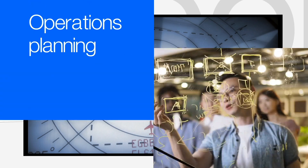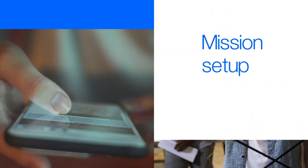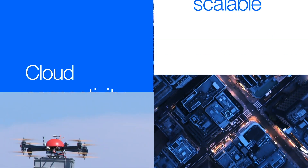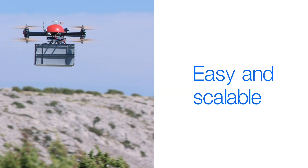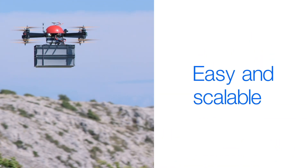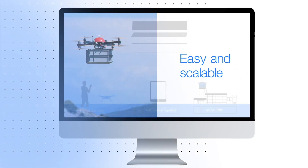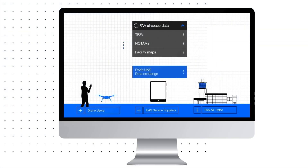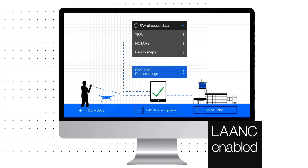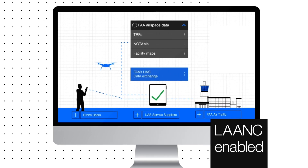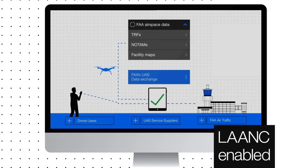FAA compliance ensures proper UAV integration into the national airspace. Precise operations planning and mission setup, along with cloud connectivity to the hardware, ensures easy and scalable UAV deployments. The C2 environment will sync up with the pilot dashboard in the larger ecosystem and will be FAA Lance enabled. We'll take a closer look at the C2 environment in later lessons.